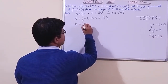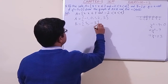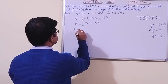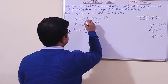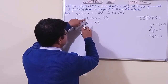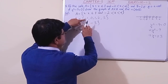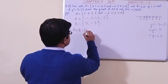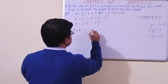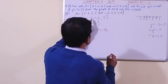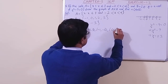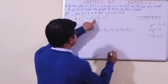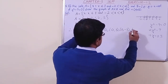Now let us find A cross B. We make ordered pairs: minus one is paired with 3, giving (minus 1, 3), then (minus 1, minus 3). Then zero is paired with 3 giving (0, 3), and then (0, minus 3).